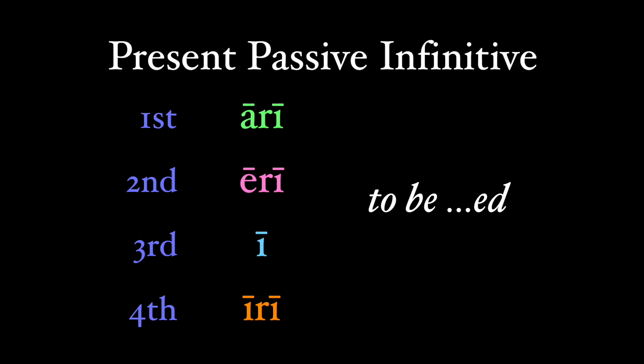So here we go, the present passive infinitive. The endings for this infinitive end in a long ī, but each conjugation does it differently. And these are importantly the present infinitive endings for deponent verbs. It's very straightforward.